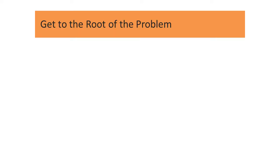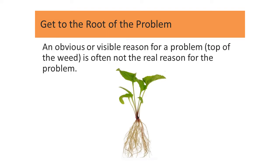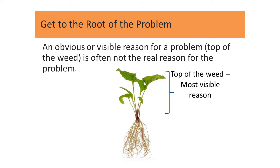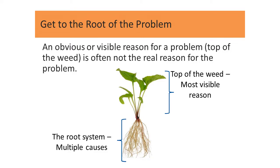But why is teach back not properly used? This is where your root cause analysis, or RCA, comes into play. Weeds are a great analogy for RCAs. We know for a weed not to come back, we must pull the entire root, which is a system — a network of multiple parts. But too often, we go for that most visible problem to pluck off. And the most obvious or visible reason for a problem is often not the real reason for the problem, but just a symptom.